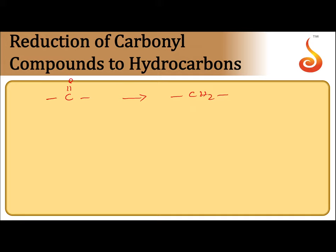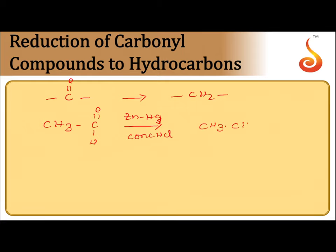The C=O group is reduced to CH₂. If there is zinc amalgam and concentrated HCl, or hydrazine and potassium hydroxide on the arrow, then the C=O is replaced by CH₂. For example, ethanal treated with zinc amalgam and concentrated HCl: